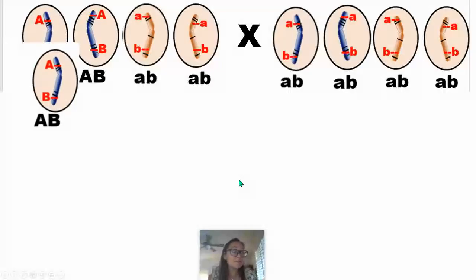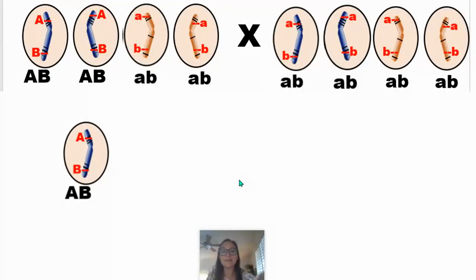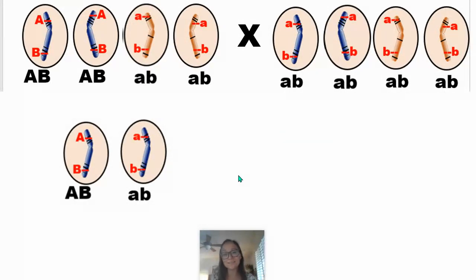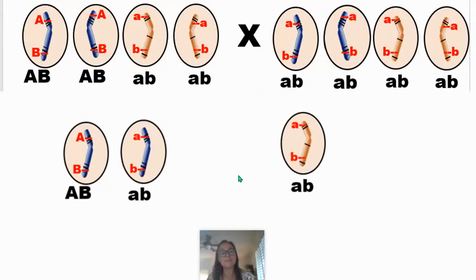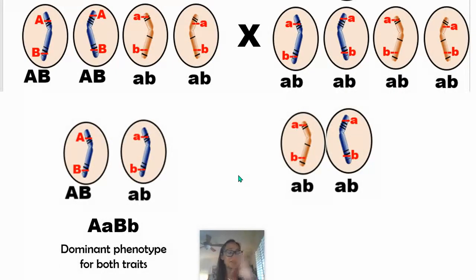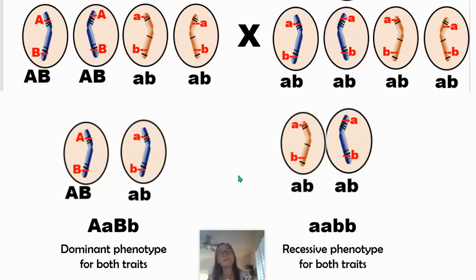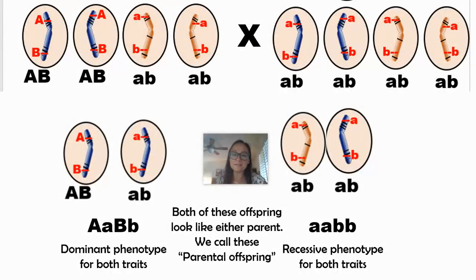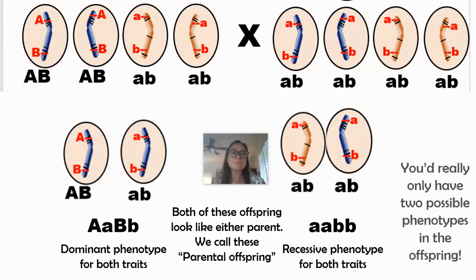If we look at the possibilities for offspring: an egg carrying the two dominant alleles fertilized by sperm carrying both recessive alleles gives an offspring dominant for both traits, while the other gamete combination gives an offspring homozygous recessive for both traits. So one offspring has the dominant phenotype for both traits and the other has the recessive phenotype for both. These offspring look like either parent, so we call them parental offspring. With linked genes, you'd only expect two possible phenotypes because there's no independent assortment creating four combinations.